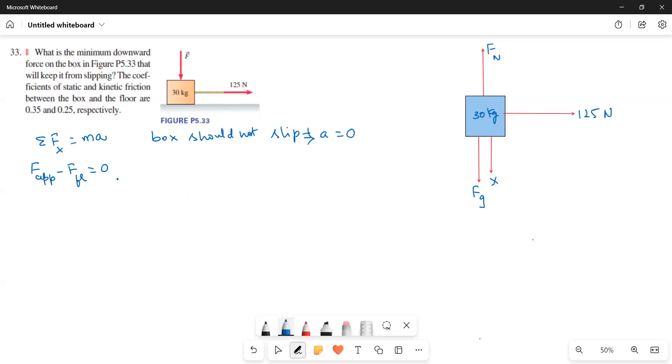Now we have the applied force given to us. So we have to find out the friction. So how to find out the friction? Sigma FY is equal to MA.